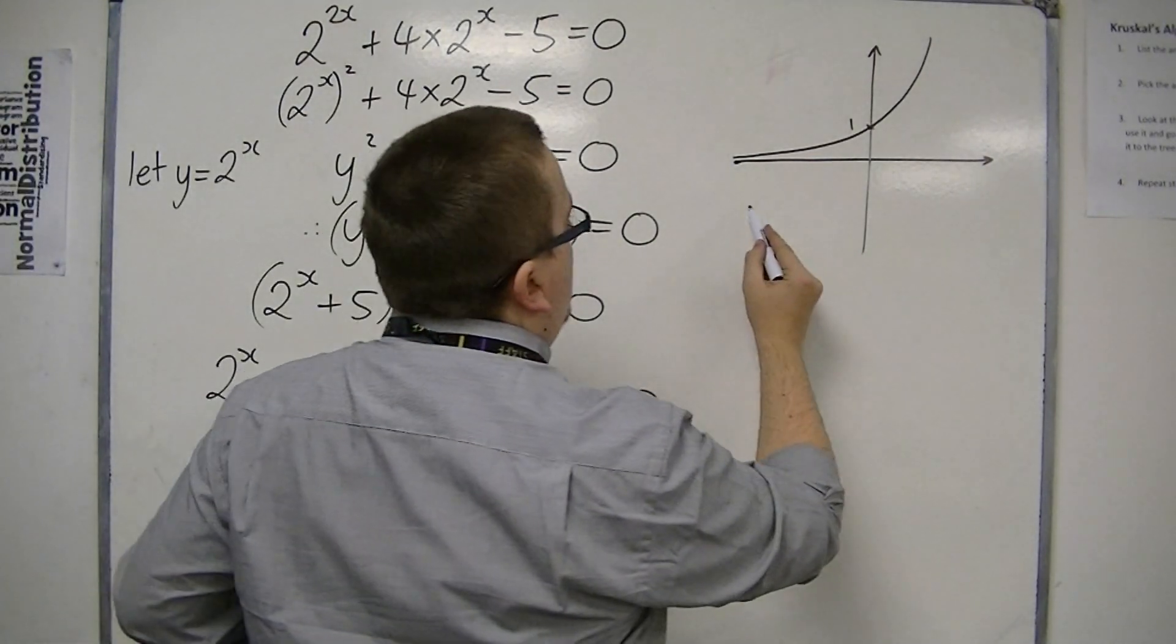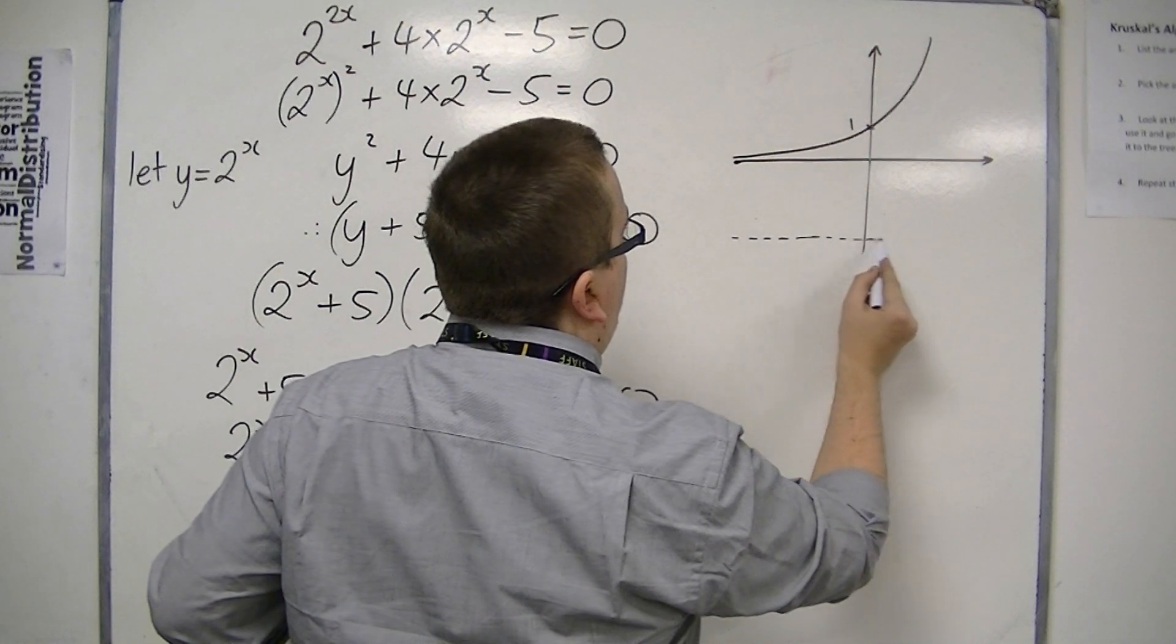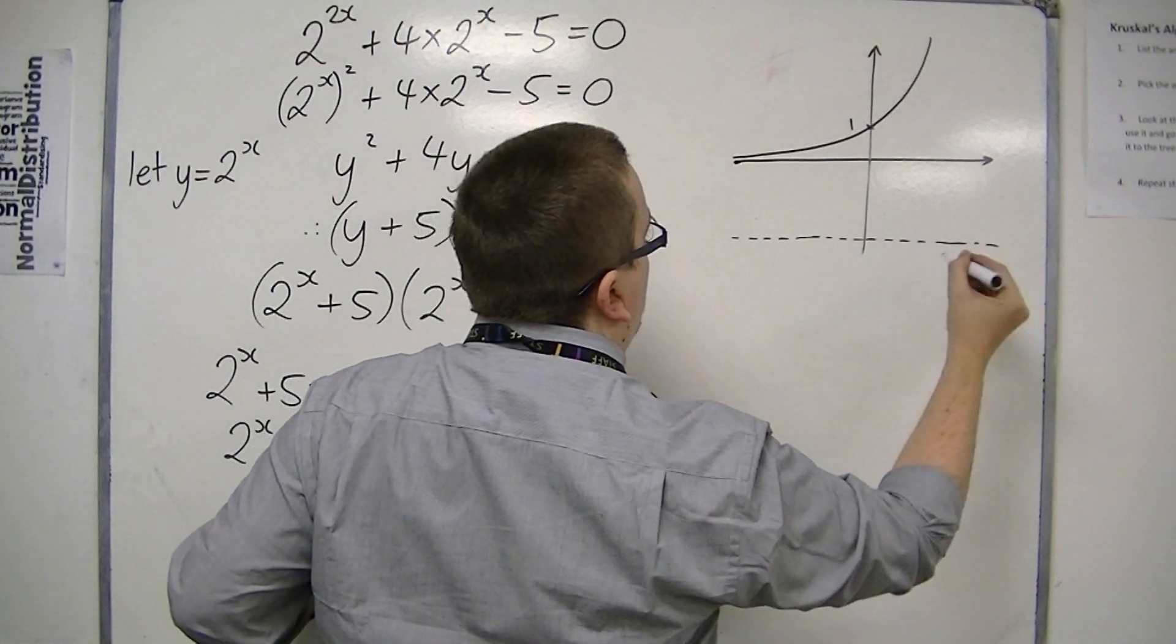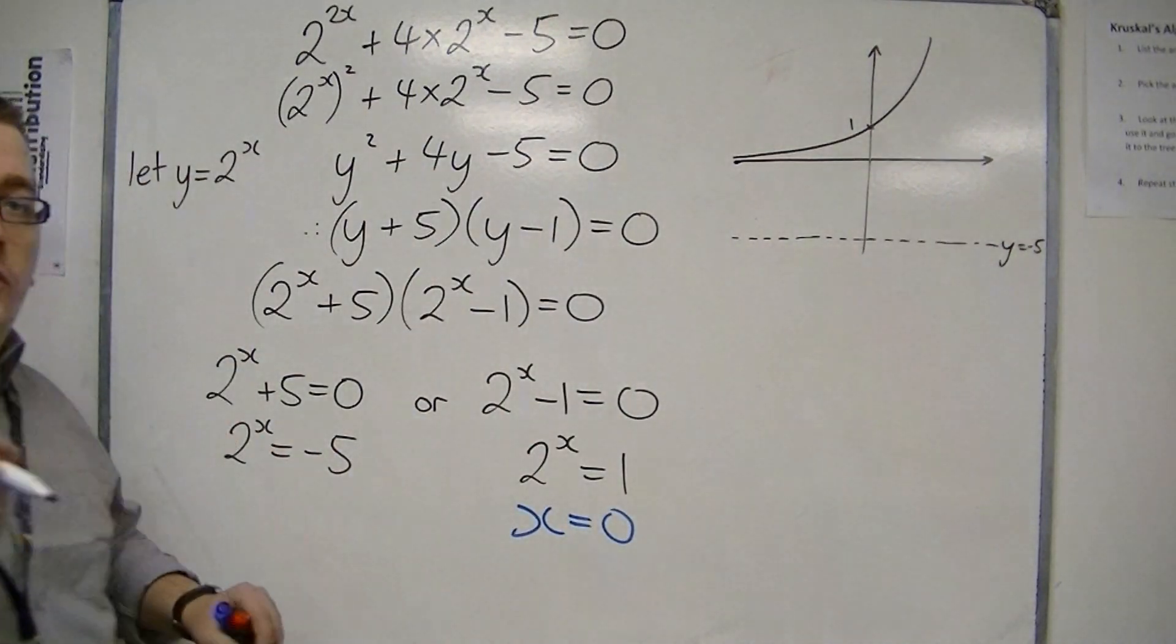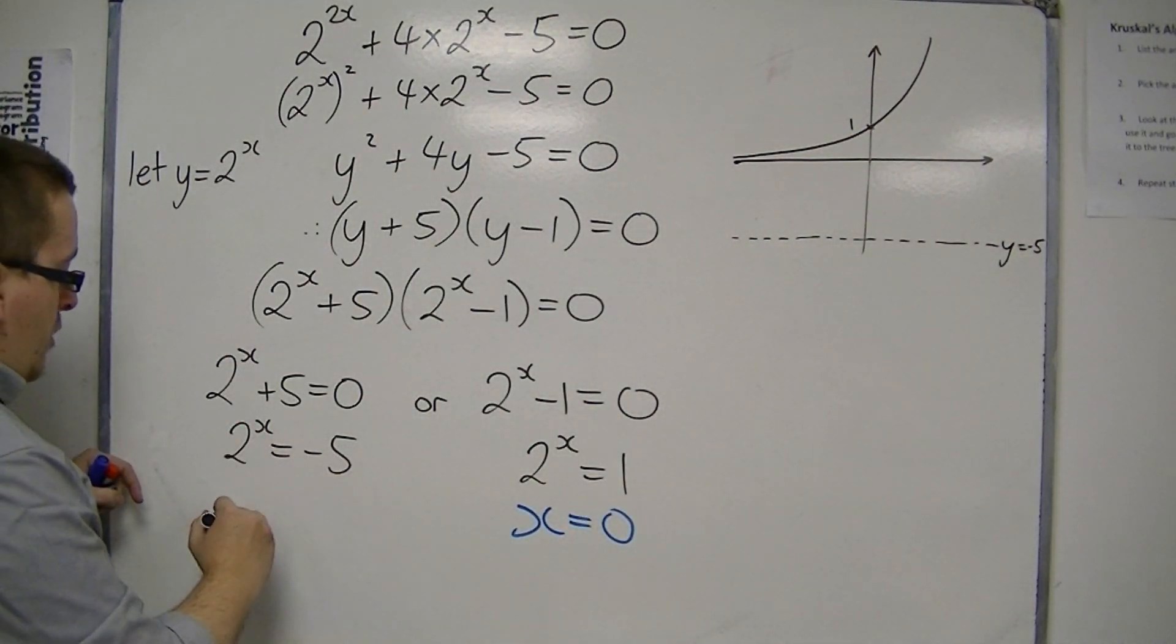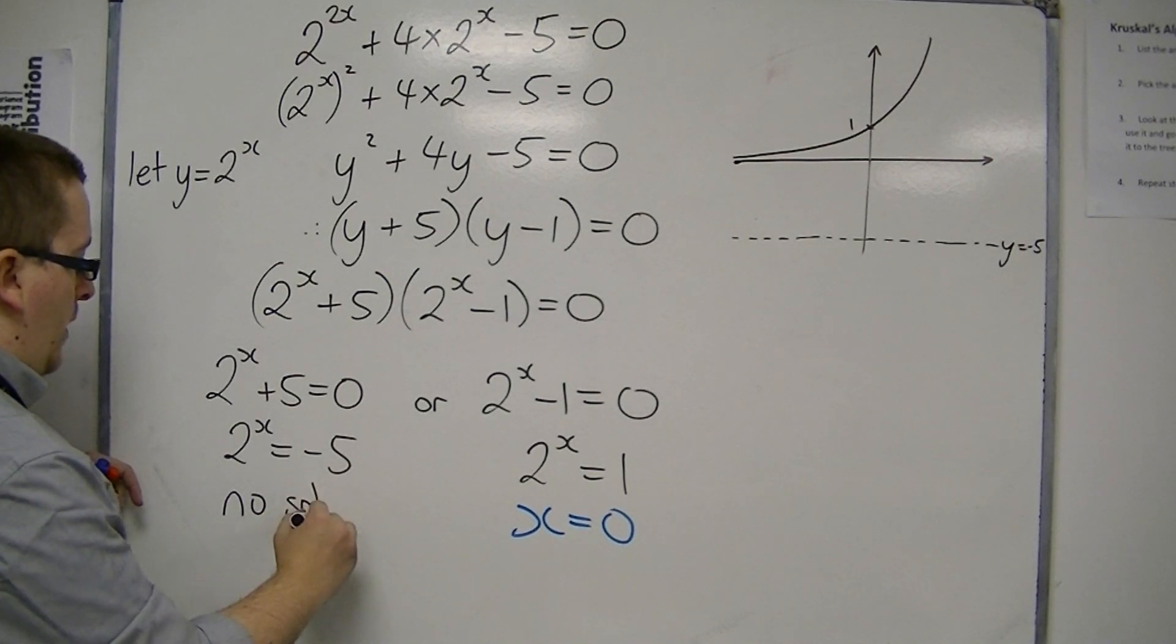And so if I'm asking myself, well, where does it intersect this line y equals minus 5? Well, it doesn't. It doesn't intersect it whatsoever. And so there are no solutions to this equation.